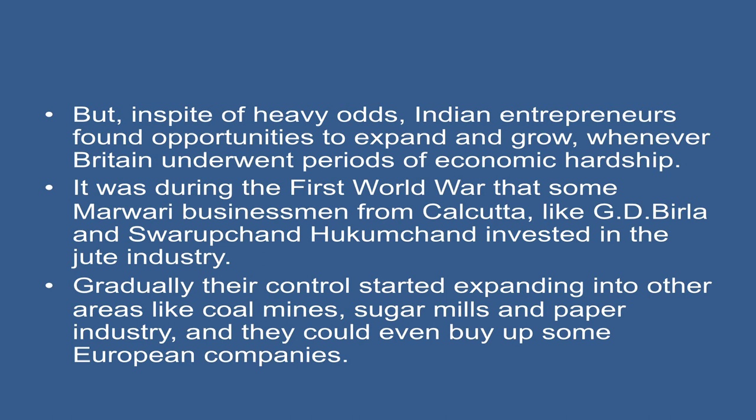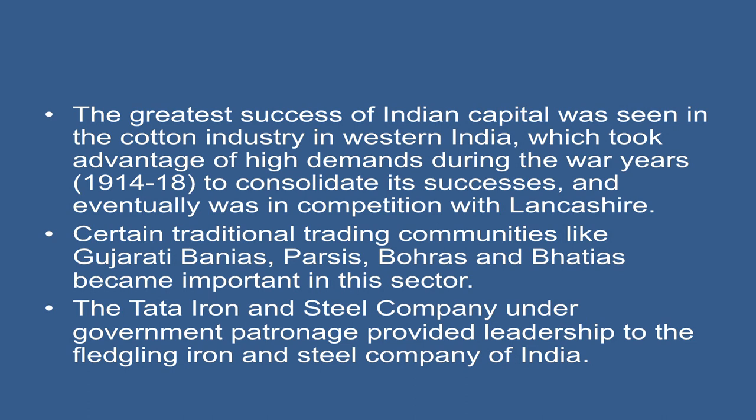Gradually, their control started expanding into other areas like coal mines, sugar mills, and the paper industry, and they could even buy up some European companies. The greater success of Indian capital was seen in the cotton industry in western India, which took advantage of high demands during the war years of 1914 to 1918 to consolidate its success, and eventually came into competition with Lancashire.